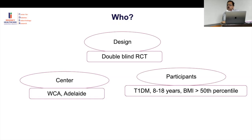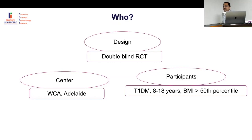The participants are type 1 diabetics aged 8 to 18 years with BMI above the 15th percentile. Why 8 to 18? Before puberty, metabolic complications are very unusual, so including children under 8 would waste sample size with no detectable difference.